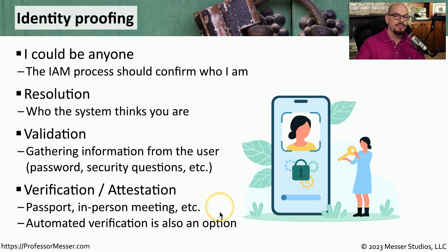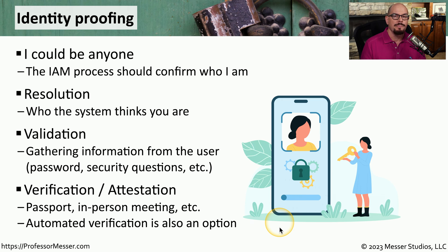Verification might also include an in-person meeting. There are also automated verification options that might look at a user's credit report and ask specific questions about where a person may have lived or the type of assets they might have owned.